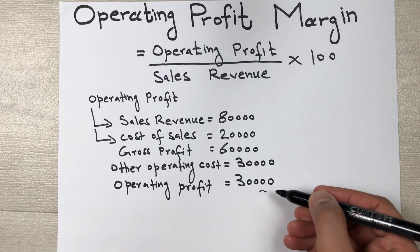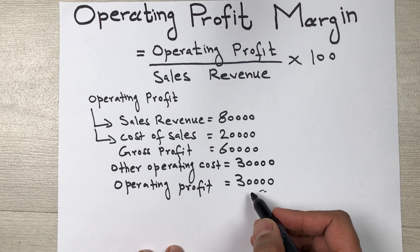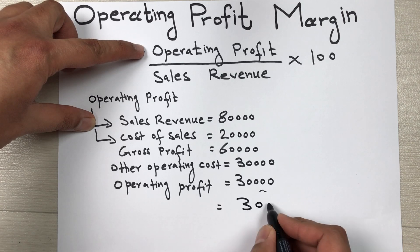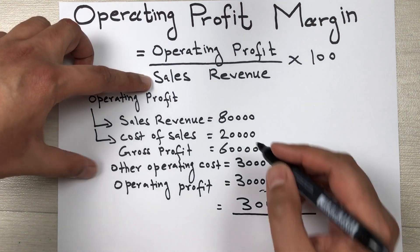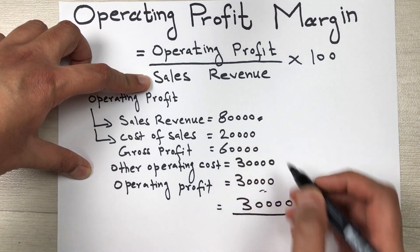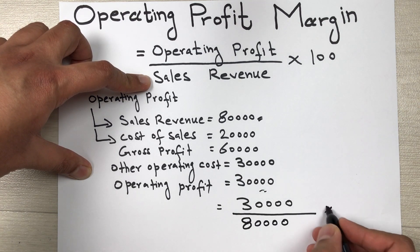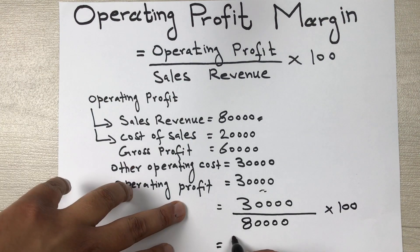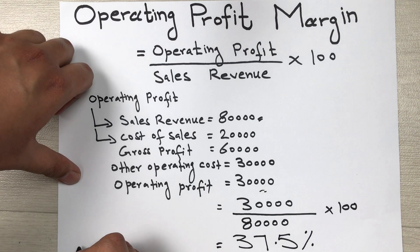Now we put these values into the formula to get our answer. Operating profit is 30,000, divided by sales revenue of 80,000, then multiplied by 100. When we do this calculation we get our final answer, which is 37.5%. This is our operating profit margin.